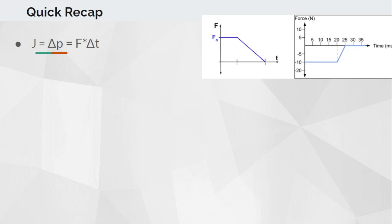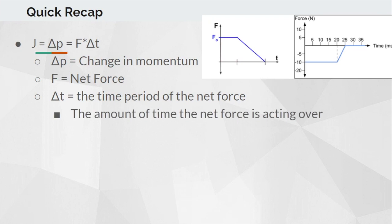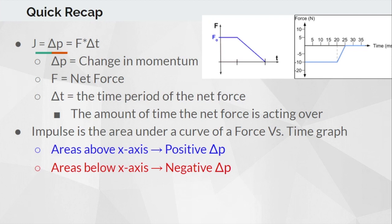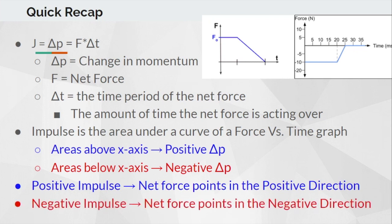Let's quickly recap some important concepts. Impulse equals the change in momentum, which also equals force times delta T. Delta P is the change in momentum, F is our net force, and delta T is the time period of the net force. Impulse is the area under a force versus time graph — area above the x-axis is positive impulse, and area below the x-axis is negative impulse. Positive impulse results in a net force pointing in the positive direction, and negative impulse results in a net force pointing in the negative direction.